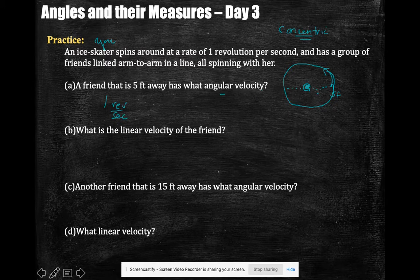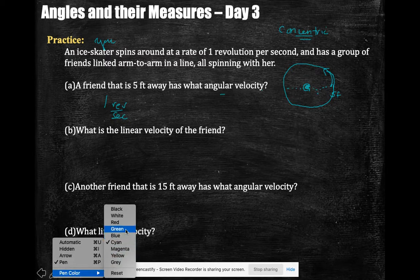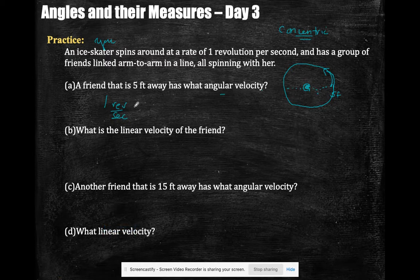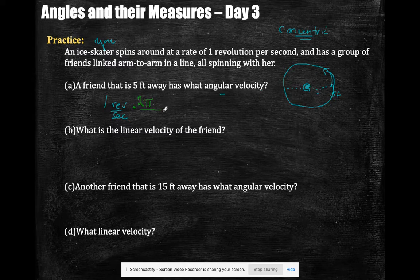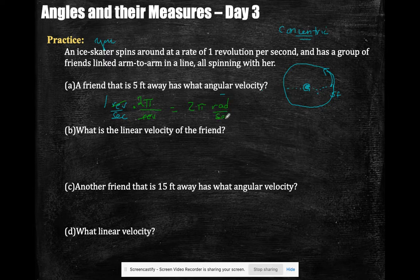I do need to do my unit conversion here. It takes 2π, the circumference of my unit circle, is 1 revolution. So that's 2π radians per second.